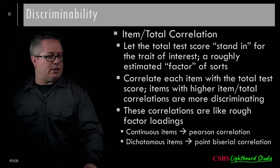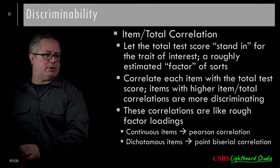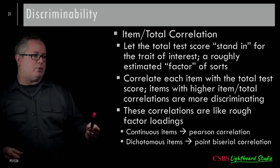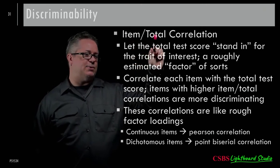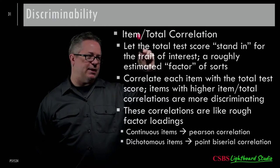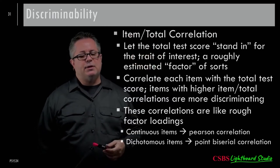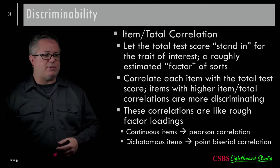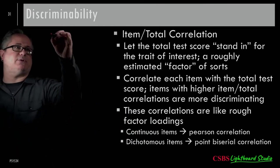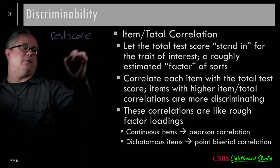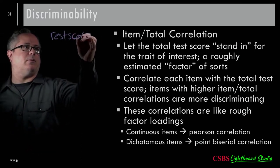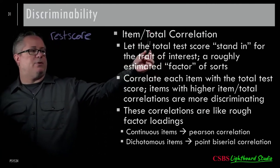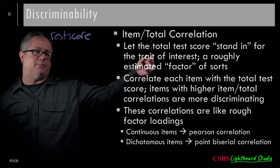One issue with item-total correlation: the item being analyzed is itself included in the total, which artificially inflates the correlation. The solution is the rest score — correlating the item with the total of all the remaining items, excluding the item itself. Some software (like Lavaan) calls this a 'drop item' correlation, dropping the item from the total. It's a little more accurate.